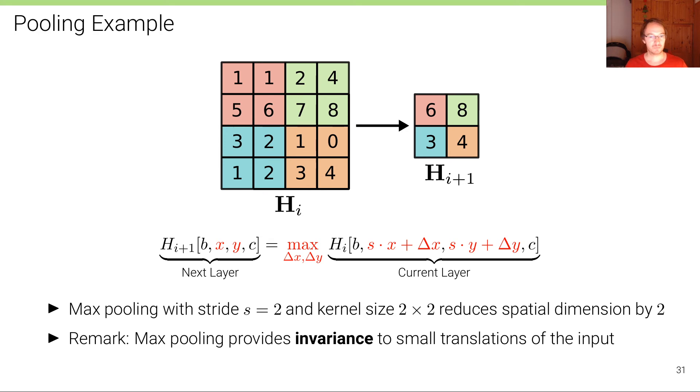One remark is that max pooling provides some invariance to small translations of the inputs. That has often been used as an argument for why max pooling is useful. But in practice, often today, people have replaced max pooling with what's called a strided convolution.